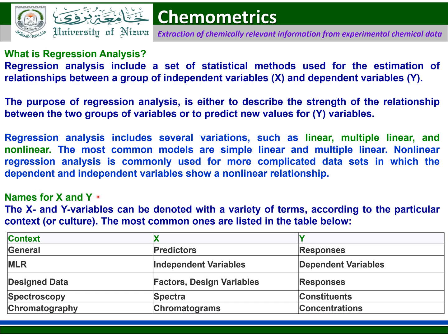Names for x and y variables. The x and y variables can be denoted with a variety of terms. The most common ones for the x variable are predictors, independent variables, factors, spectra, and chromatogram. For the y variable, the names responses, dependent variables, constitute, and concentration are most commonly used.